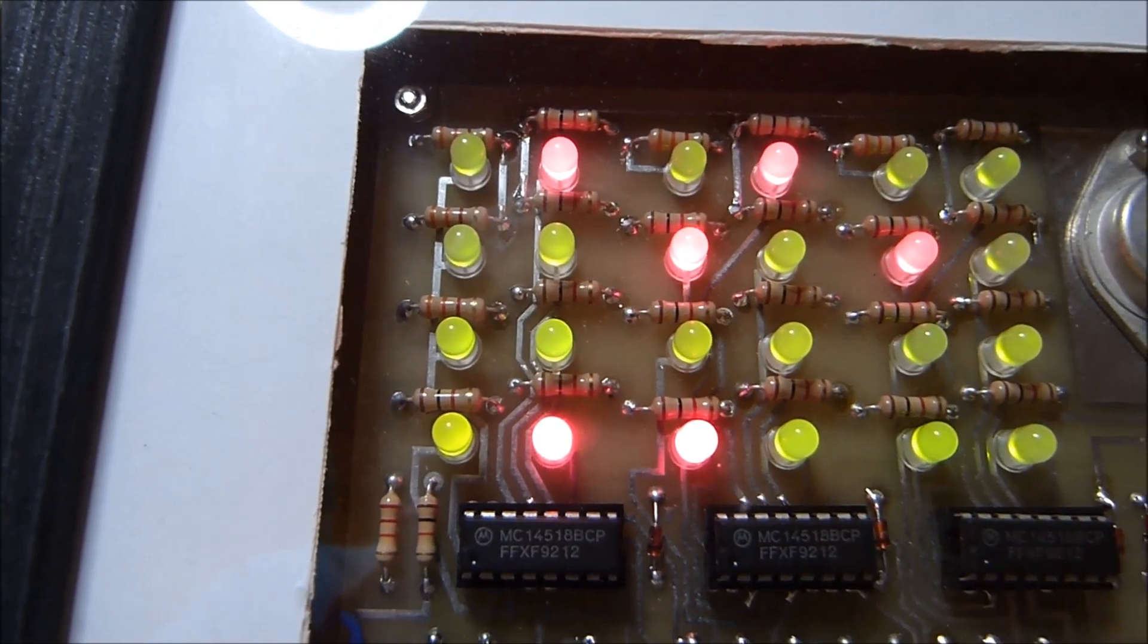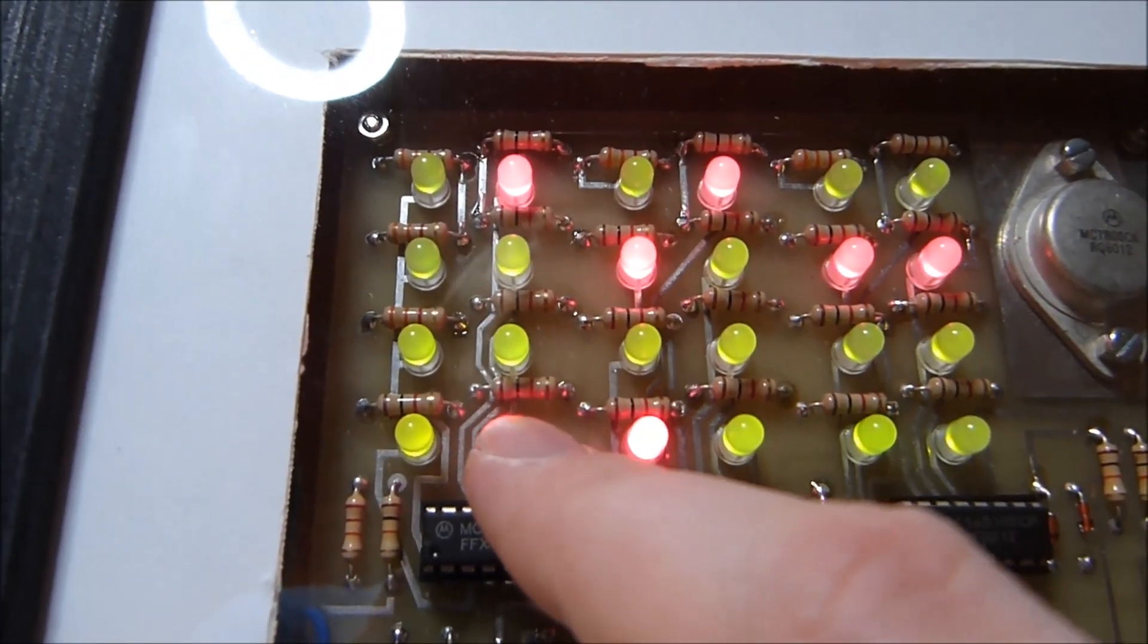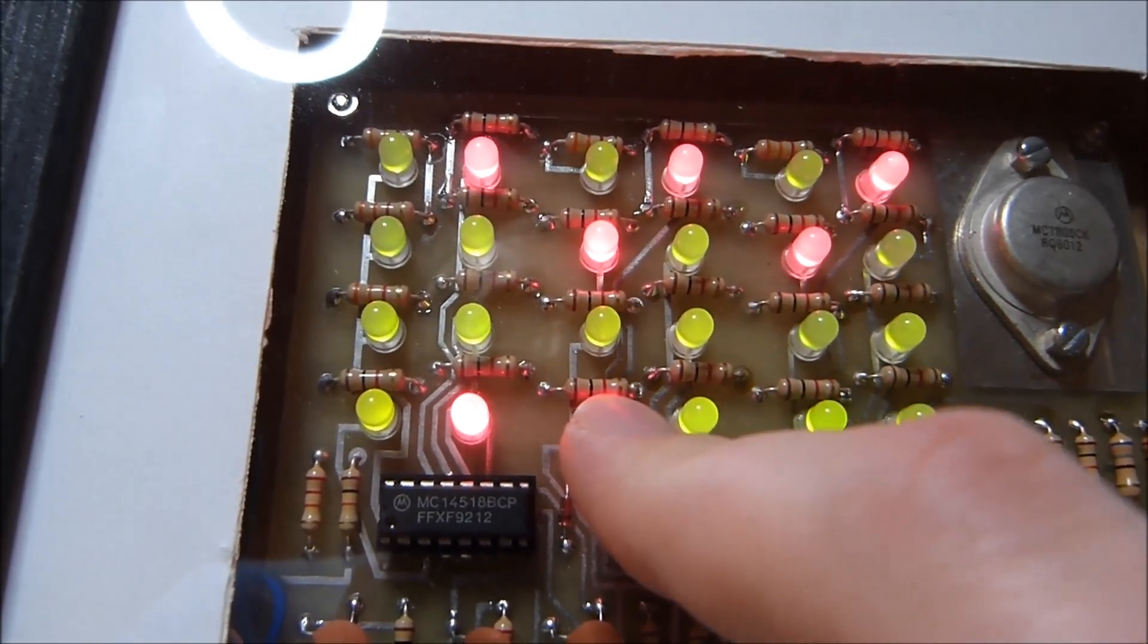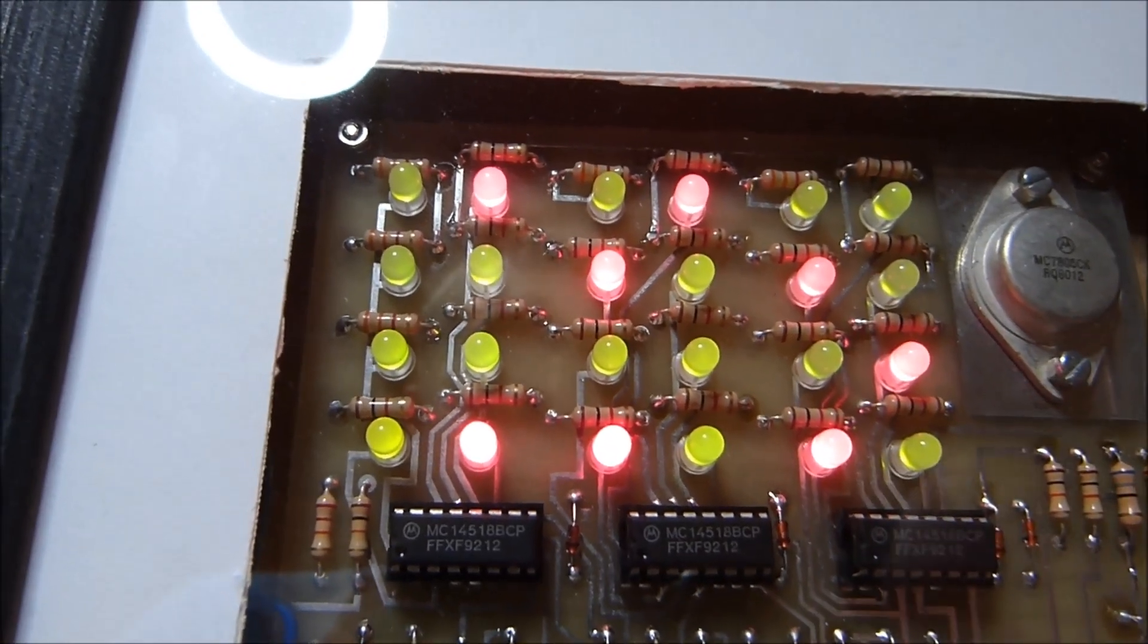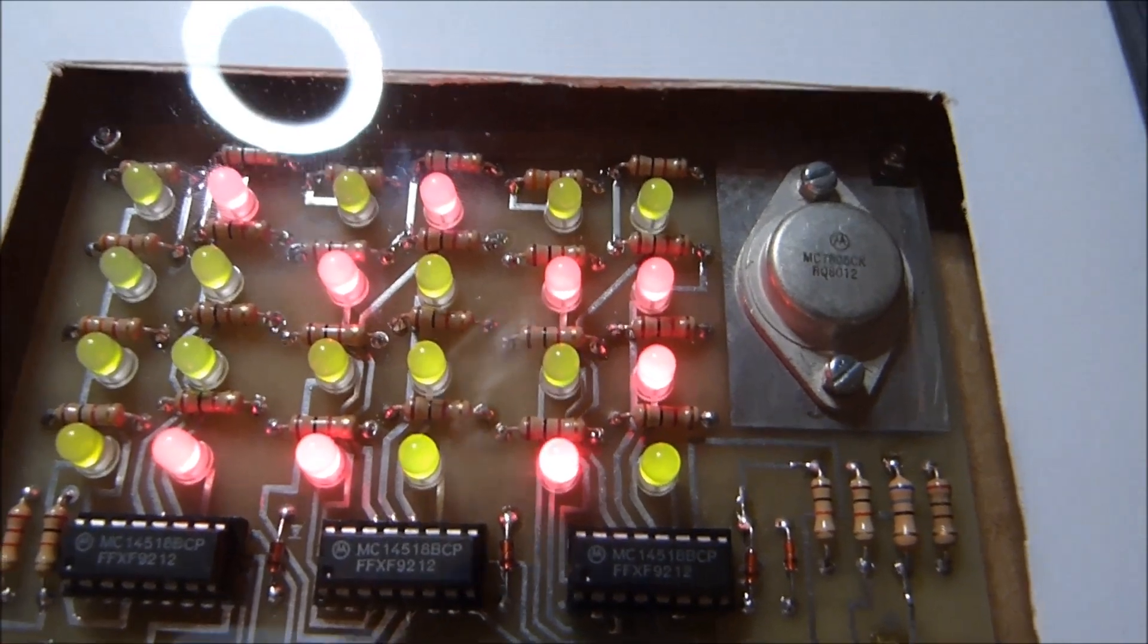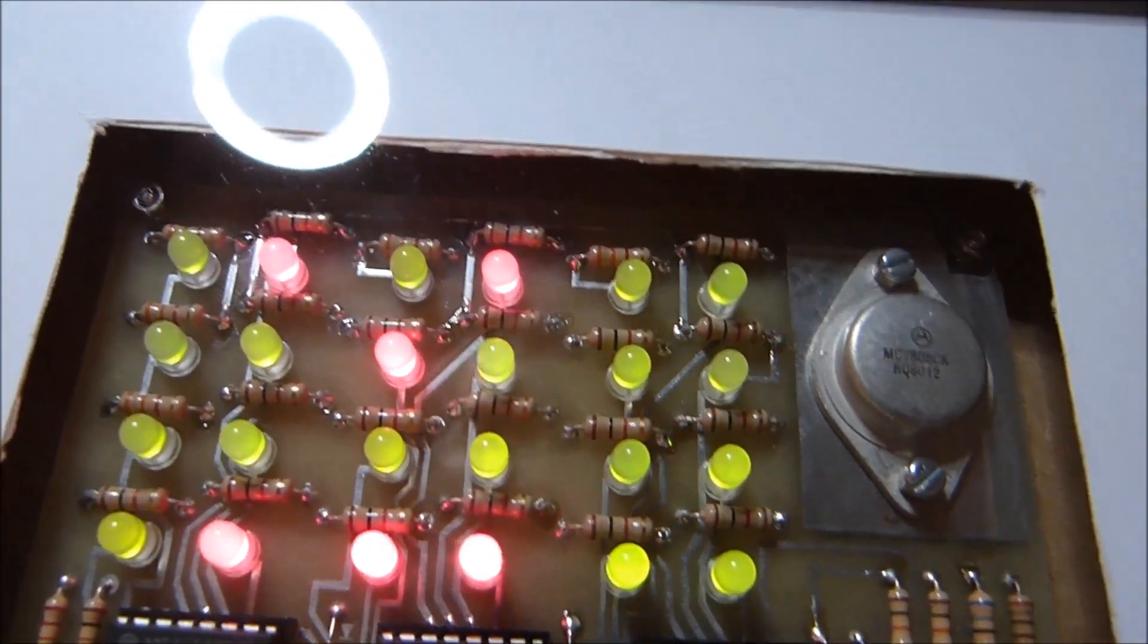And you add up all the red LEDs to read the time. So this is eight plus one equals nine. Four plus one equals five and eight. So that's 9.58. And fifty eight, nine, zero seconds.